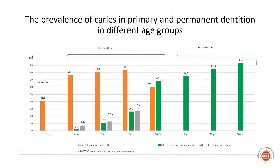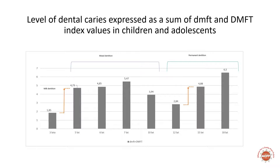It is worth highlighting that caries of secondary teeth occurs in a short time after their eruption. You can see the prevalence of caries in five and six-year-olds. At the age of three, on average two teeth have caries lesions; at the age of five, nearly five. A 12-year-old child has on average over two teeth with caries and an 18-year-old over six.